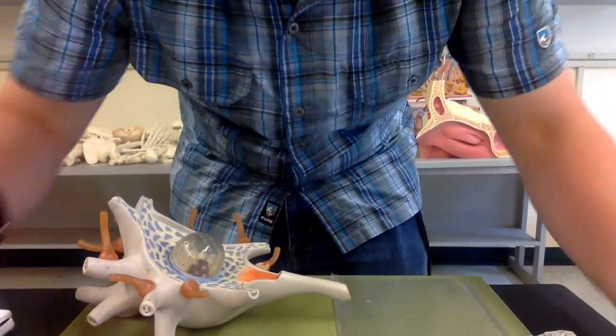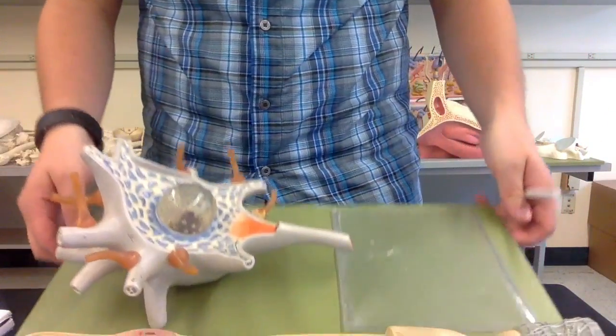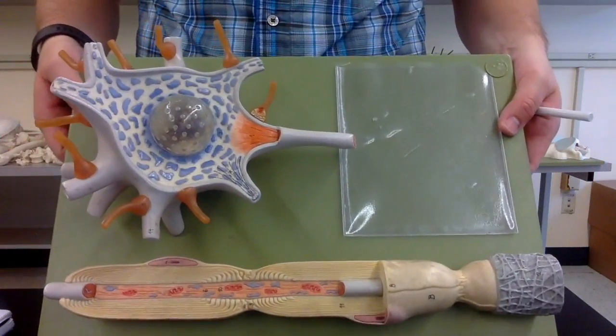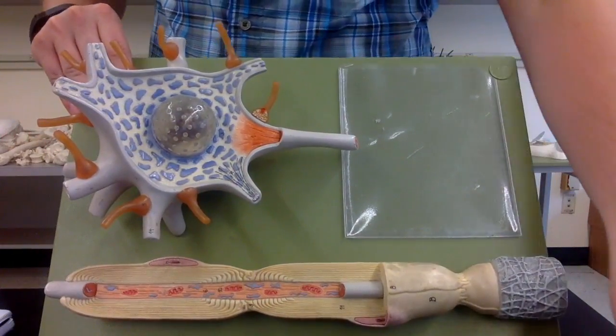Okay guys, Taylor here back at it again for the Teacher T Anatomy 3 channel. Today we're going to go over the neuron. I have one specific neuron model I'm going to go over. There are many other types out here, but here's the one we're going to go over today.